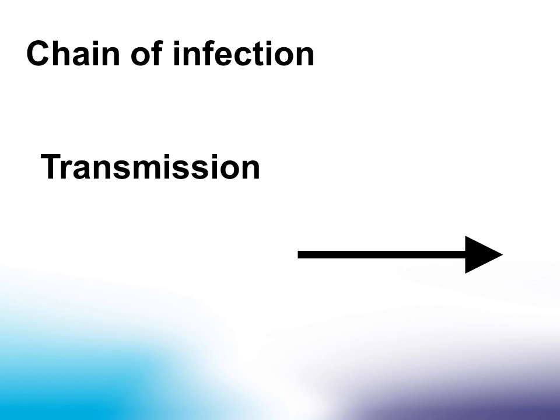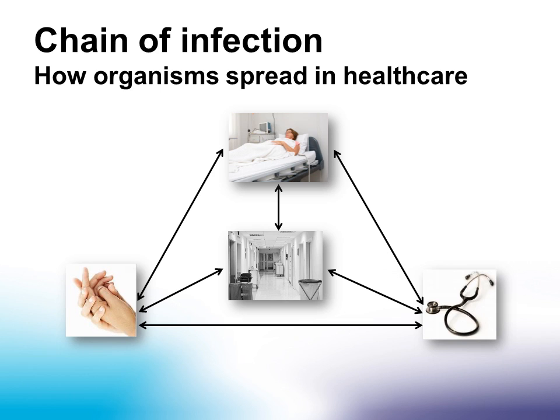Next, we will look at the role of transmission in the chain of infection. In healthcare, organisms are able to spread in many ways. It may be from a patient, on a healthcare worker's unclean hands, via a piece of equipment that has not been cleaned between patients, or from a surface that has not been cleaned adequately.